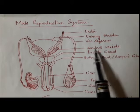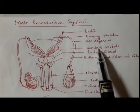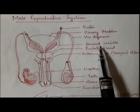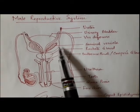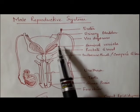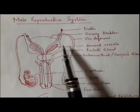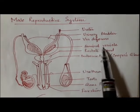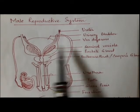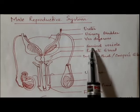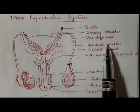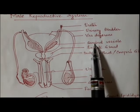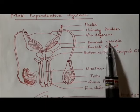The seminal vesicle forms around 60 to 70 percent of the semen. It produces a component which is viscous, alkaline, and fructose-secreting. This portion helps in secreting fructose as well as proteins like fibrinogen and prostaglandins — all are produced from the seminal vesicle.